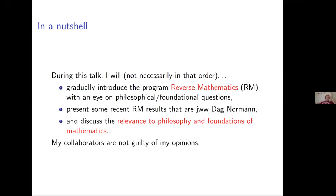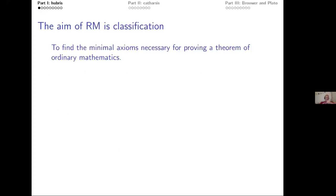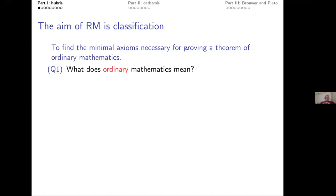Any opinion expressed here is my own. My title contains the words Plato, Brouwer, and classification. Let's start with classification: the aim of reverse math is classification, namely to find the minimal axioms necessary for proving a theorem of ordinary math, rather than starting with many logical systems. What do we mean by ordinary math?